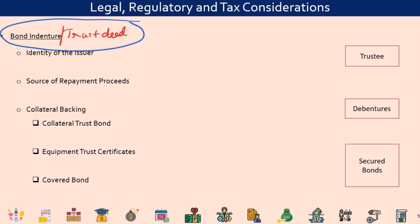The bond indenture also covers the financial aspects of the bond, such as where the bond has been issued, the principal value for each bond, the interest or coupon rate, the dates when interest and principal payments will be made, the maturity date of the bond, and any contingent provisions. The bond indenture is essentially a very comprehensive document that describes the rights of the bondholders, the legal obligations of the issuer, and all possible aspects related to that bond issue.